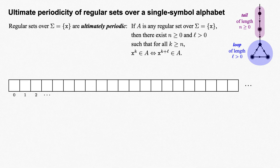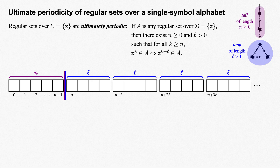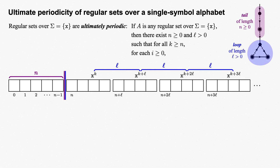Looking at which powers of x are accepted, once we hit that loop we see a periodic pattern. At any power x to the k starting with k equals n, x to the k and x to the k plus L will either both be in A or both not be in A. Adding L to the exponent goes exactly once around the loop, and thus our DFA gives the same result of accept or reject. More generally, we could say the same thing if we add L to the exponent any non-negative number i of times: x to the k will be in A just when x to the k plus iL is in A.